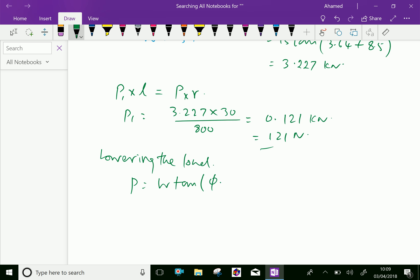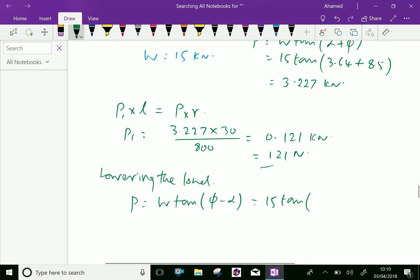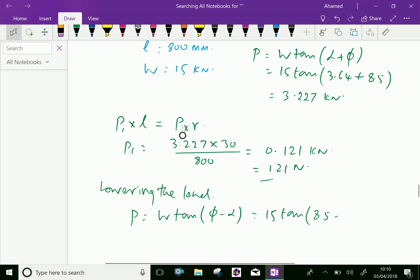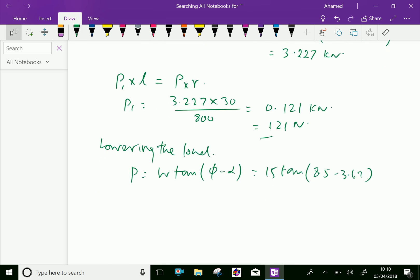For that, the relation P equals W tan of alpha minus phi, but here phi is greater, therefore phi minus alpha, which equals 15 tan of phi is 8.5 minus alpha 3.67. Let us calculate this: 15 into tan of 8.5 minus 3.64 equals 1.267 kilonewton.